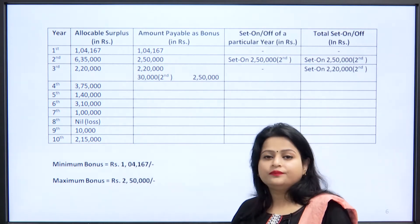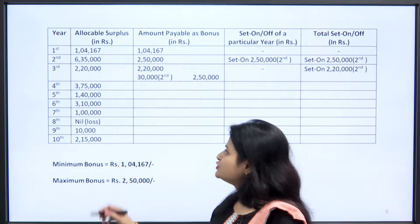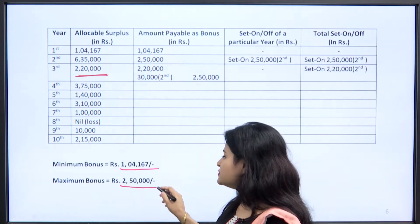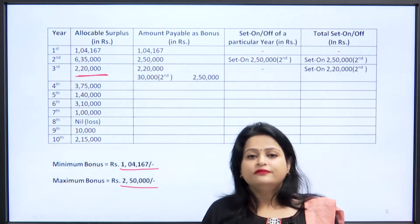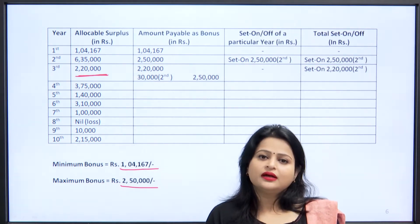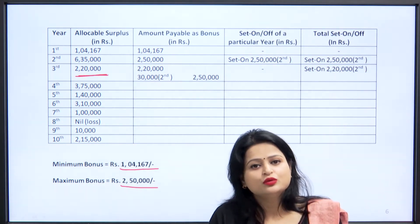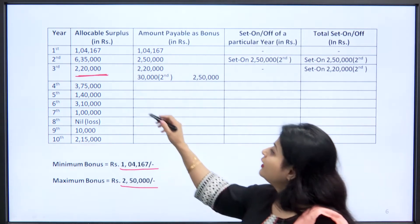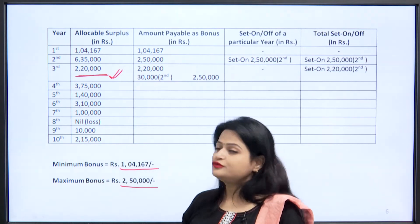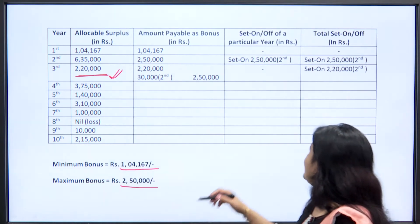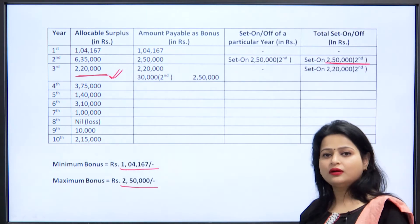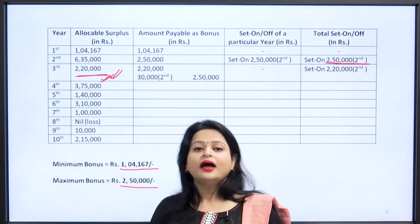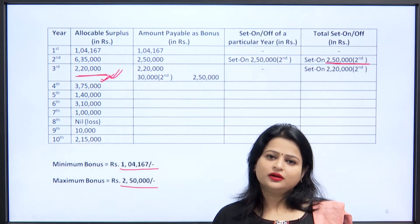Let us see the condition of the third year. In the third year we have allocable surplus of rupees 2,20,000. It is more than the minimum bonus but less than the maximum bonus. Normally we would pay the allocable surplus as bonus, but here things are different — we have a previous set on of rupees 2,50,000 from the second year. When we have previous set ons, we add those set ons to the current allocable surplus and then decide what amount to pay as bonus.